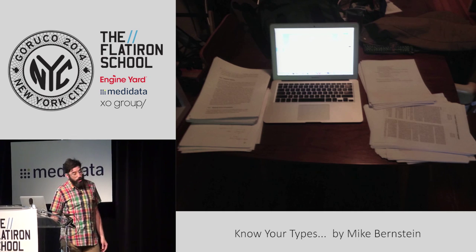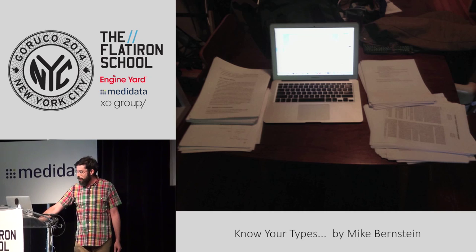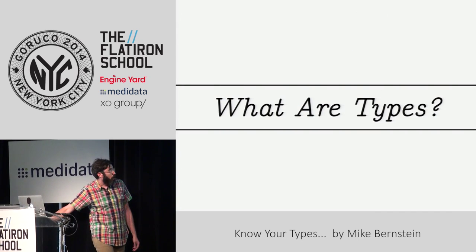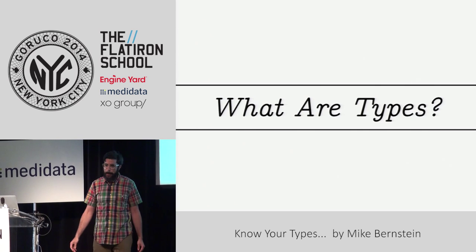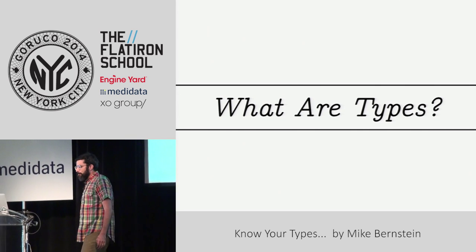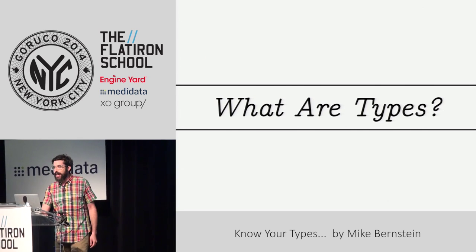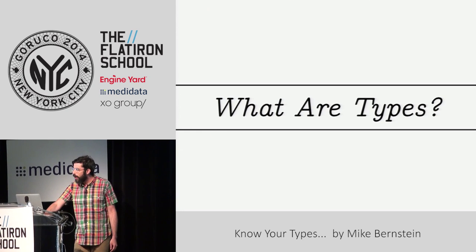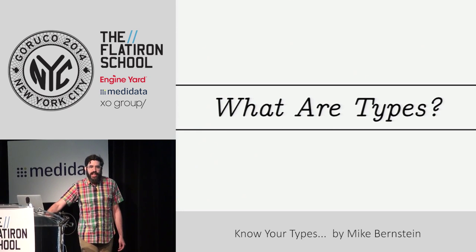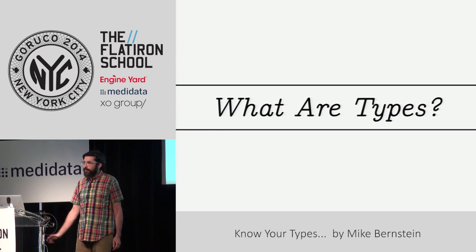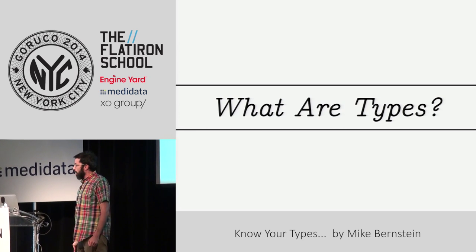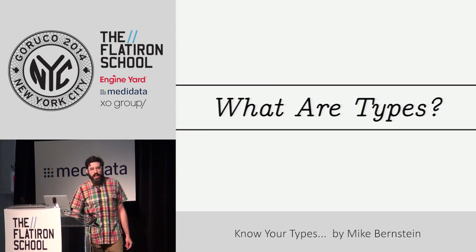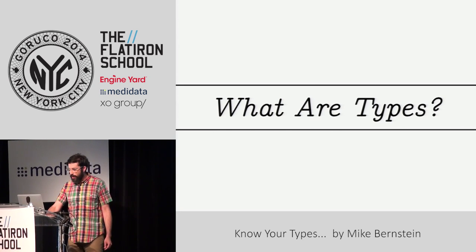I'm going to go through a lot of terms. We're going to go pretty deep, and hopefully we'll come out the other side with something practical. So what are types? Type systems and static typing come up a lot in discussions of programming languages, but we don't always take the time to define what we're talking about. That's sort of true of computer science discussions in general, but it seems to be endemic to discussions of types.